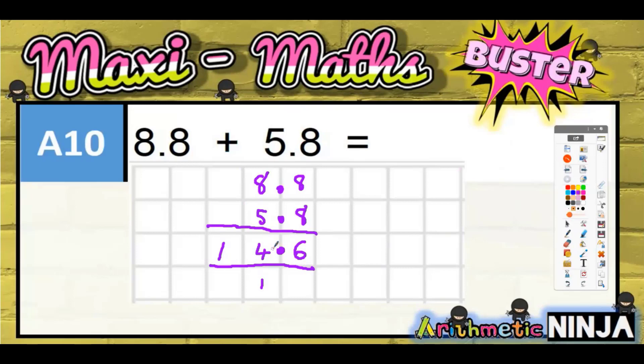So the answer to this one is going to be 14.6. If you did do it mentally, you could basically have said well 8 and 5 is 13, and 0.8 and 0.8 is 1.6.